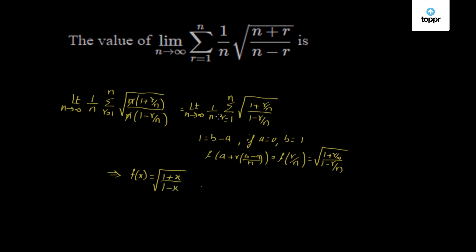The given expression, limit n tending to infinity, 1 by n, sigma r equals 1 to n, square root of (1 plus r/n) by (1 minus r/n), can be expressed as the integral from a to b, where a is 0 and b is 1, of f(x) dx — that is, the integral from 0 to 1 of square root of (1 plus x) by (1 minus x) dx. We now need to solve this integration.